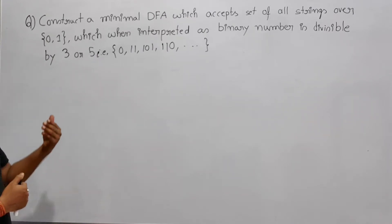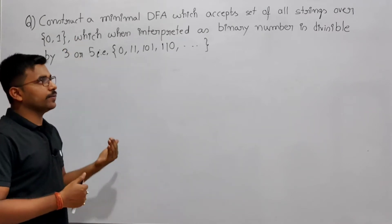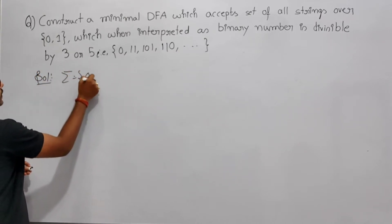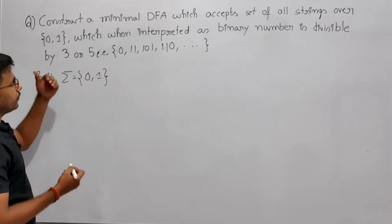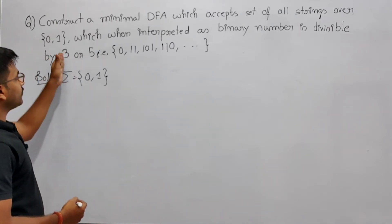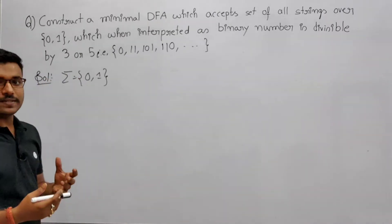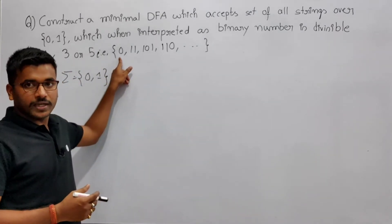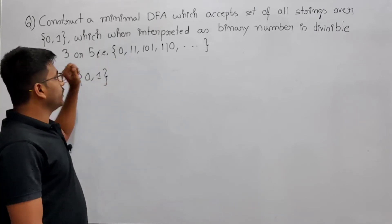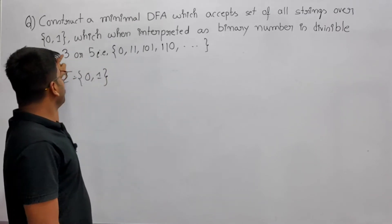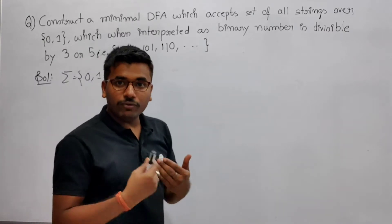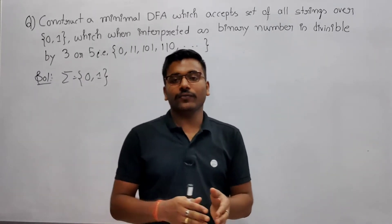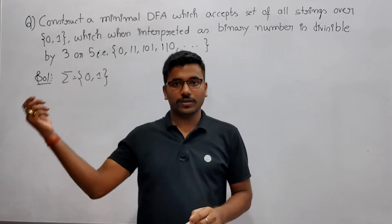The question says: construct a minimum DFA which accepts the set of all strings over {0,1} which, when interpreted as a binary number, is divisible by either 3 or 5. So sigma is {0,1}, and you have to treat strings made from 0 and 1 as binary numbers. We have to construct a minimum DFA which accepts all strings divisible by 3 or 5.